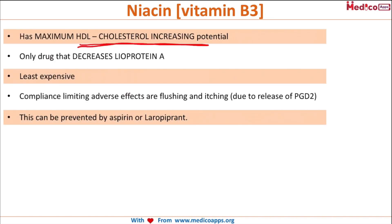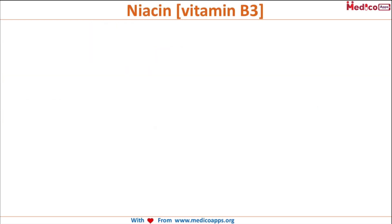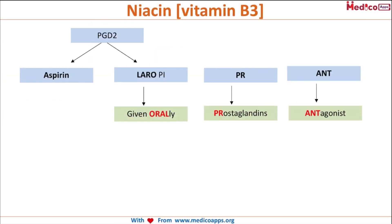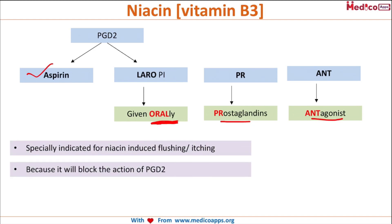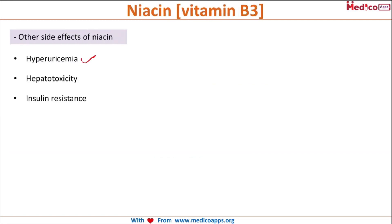Niacin has the maximum HDL cholesterol increasing potential. HDL is a highly desirable lipid, and niacin is the only drug that decreases lipoprotein(a) in the body. It is also the least expensive option. However, compliance-limiting adverse effects include flushing and itching, mainly due to release of prostaglandin D2. This can be prevented by aspirin or laropiprant, which inhibit PGD2 and are specifically indicated for niacin-induced flushing. Other side effects of niacin include hyperuricemia, hepatotoxicity, and insulin resistance.